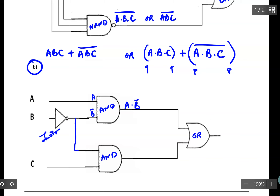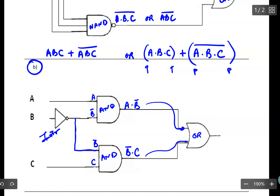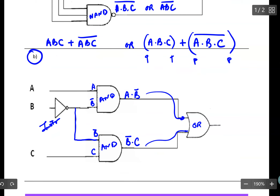Coming from here, B inverted goes into the next AND gate along with C, so I should have B inverted dot C. I run these two signals into the OR gate, so in the end my Boolean expression should be A dot B-inverted, added with B-inverted dot C. Or you can write it as AB̄ + B̄C.